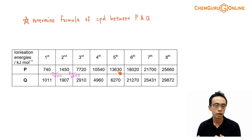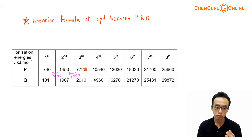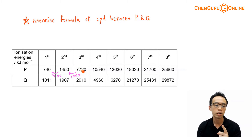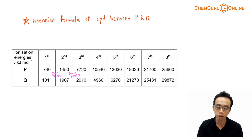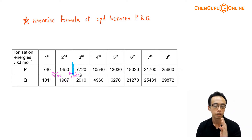You'll notice the first and second IE differ by about 700. But the second and third IE show a very, very significant jump of about 6000 something kJ per mole. So this is the first big jump in ionization energy. My practice is to draw a line down at this point to mark the big jump.